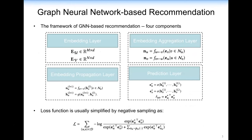Now, we reveal the framework of GNN-based recommendation, which contains four components: embedding layer, embedding aggregation layer, embedding propagation layer, and prediction layer. The embedding layer keeps an initial item-embedding matrix and user-embedding matrix. The embedding aggregation layer is a significant component, which connects and aggregates neighbor information. The embedding propagation layer captures higher-order interactions between users and items, propagating embeddings layer-by-layer. The prediction layer uses the inner product to estimate the user's preference towards the target item.